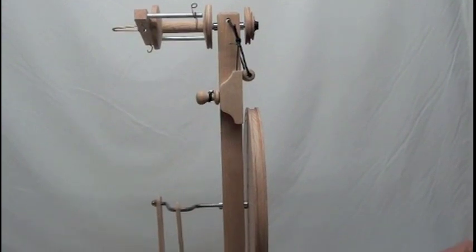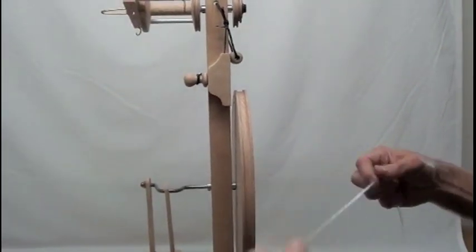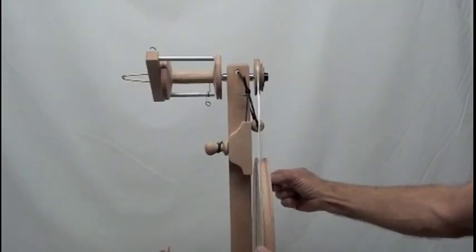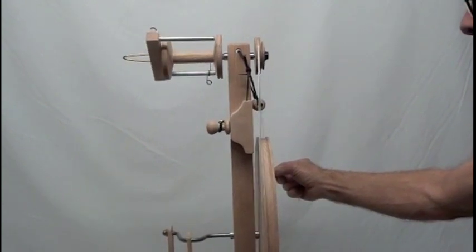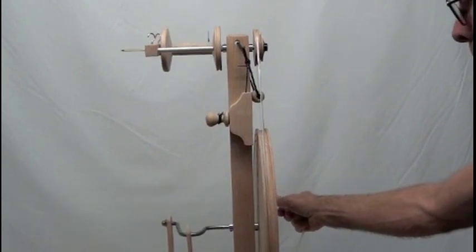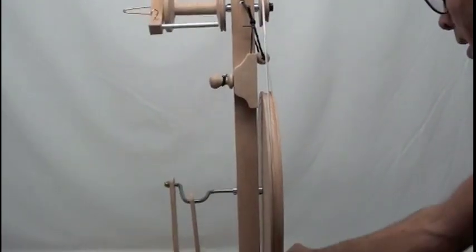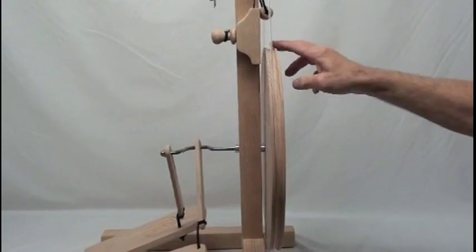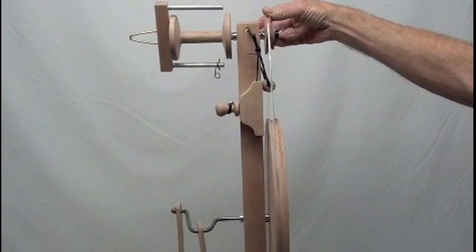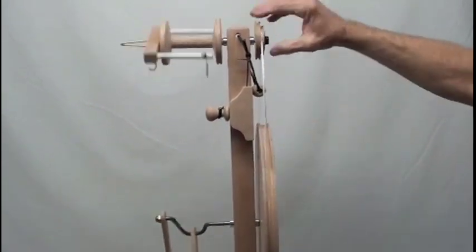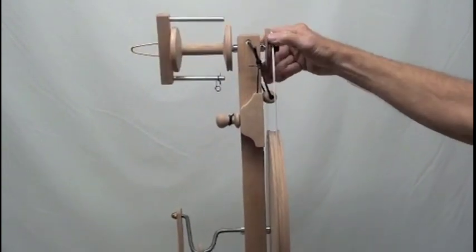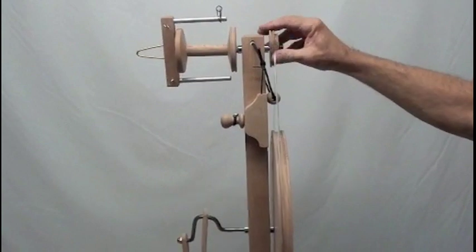To put on the drive band, hook the drive band over the whorl, either the large or the small part. I recommend using the large one when you are beginning. It is a little easier to control, take up and speed. And then just bring it around the wheel. When you get ready to change from one whorl to the other, just drop it over like that. Easily changed from one to the other.